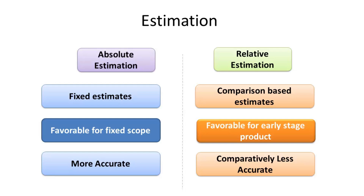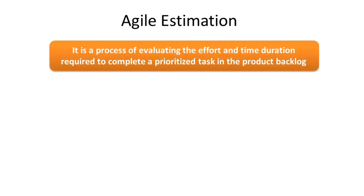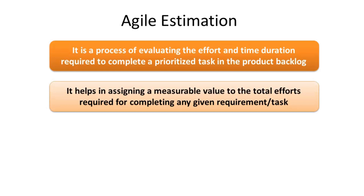Few examples of Relative Estimation techniques are Planning Poker, T-Shirt Sizing, and Bucket Sizing. We will discuss these three techniques in detail going forward. Now let us discuss Agile Estimation. It is the process of evaluating the effort and time duration required to complete a prioritized task in the Product Backlog. It helps in assigning a measurable value to the total efforts required for completing any given task.